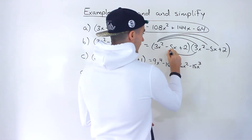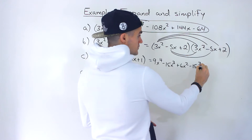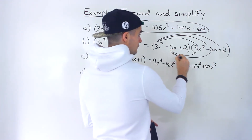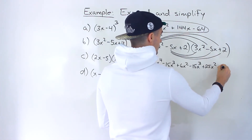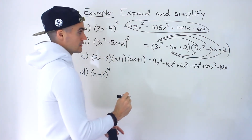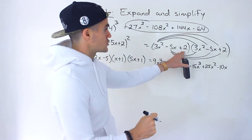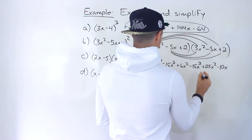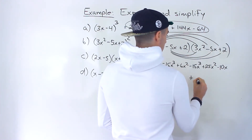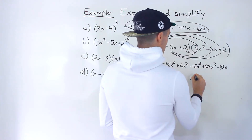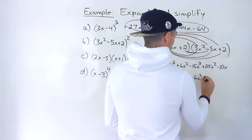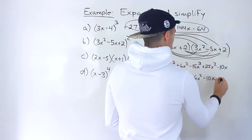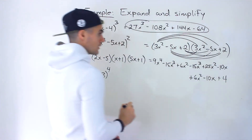Negative 5x times negative 5x gives positive 25x squared. Negative 5x times 2 gives negative 10x. Then we take the 2 and distribute it to the bracket: 2 times 3x squared gives 6x squared, 2 times negative 5x gives negative 10x, and 2 times 2 gives positive 4.